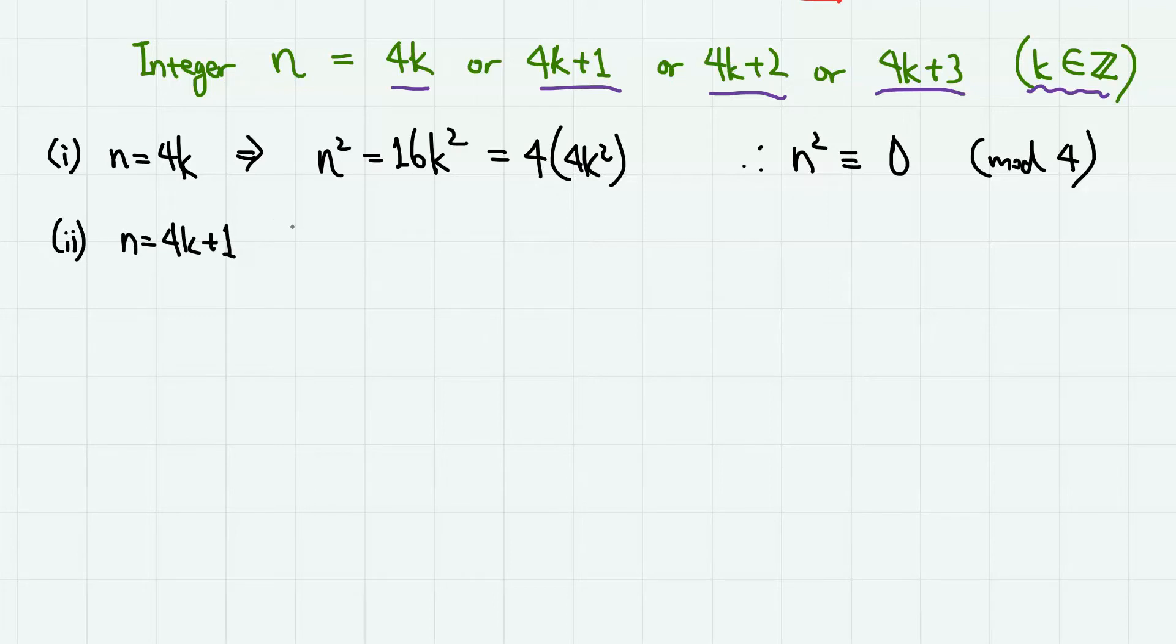Next, if n = 4k+1, then n² = 16k² + 8k + 1, which is 4 times (4k² + 2k) + 1. So we have 4 times some integer plus 1. So therefore, in this case, the remainder is 1 when divided by 4.